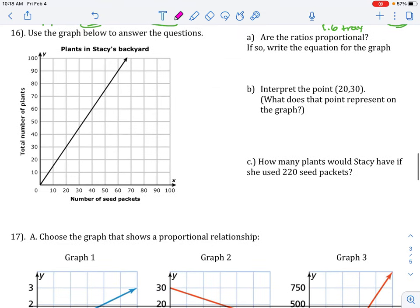Number 16. Use the graph below to answer the questions. Are the ratios proportional? If so, write the equation for the graph. Remember, when a graph is proportional, it is a straight line and it touches the 0, 0 origin.